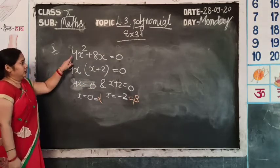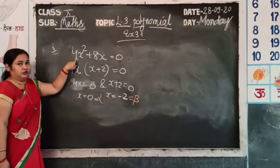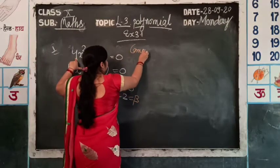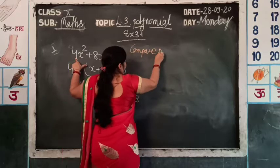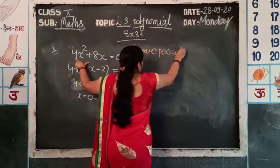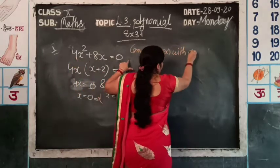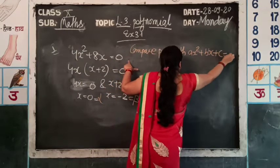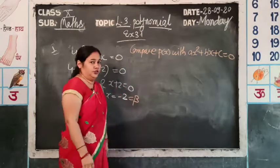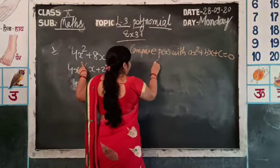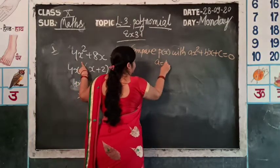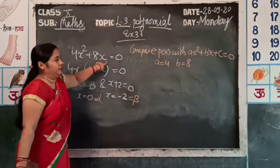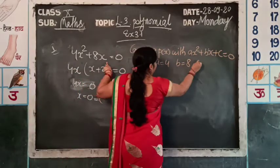Now compare 4x² + 8x with ax² + bx + c = 0. Then a = 4, b = 8, and since there is no constant term, c = 0.